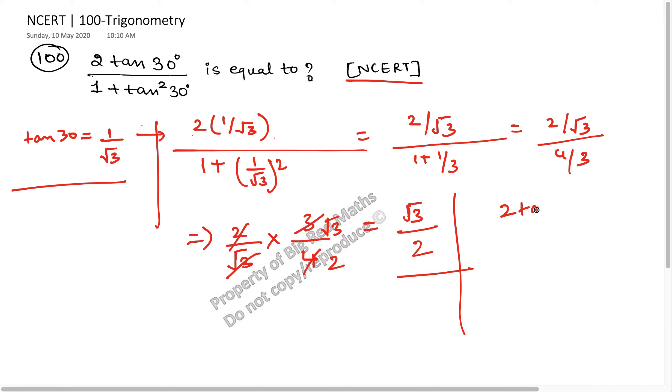2 tan theta upon 1 plus tan square theta is the value of tan 2 theta. This is an extra piece of information that you should know. Sin 2 theta, which is not in 10th class syllabus, sin 2 theta is equal to 2 tan theta upon 1 plus tan square theta. For theta equals 30 degree, sin 2 theta is the value of root 3 by 2.